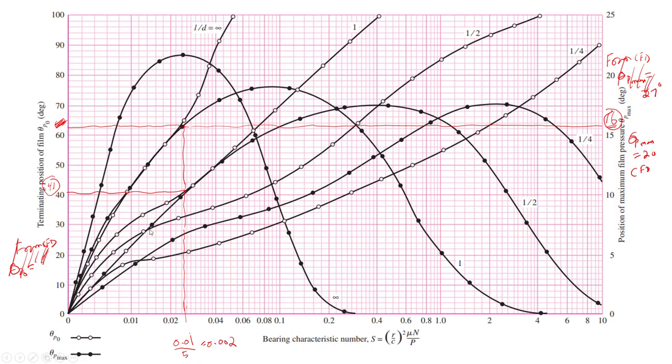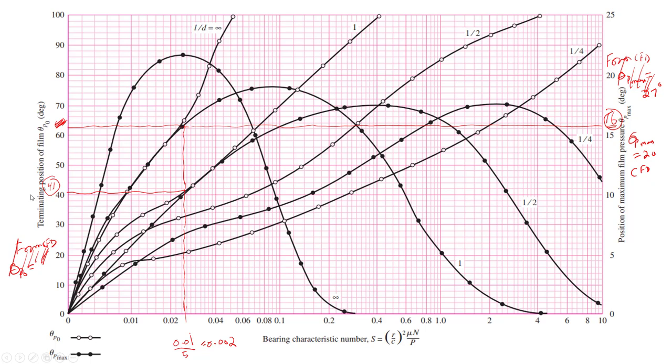Theta P zero is 41 degrees from the graph and from CFD it is around 60 to 70 degrees, which you will see in the video. Everything is discussed from scratch, like definitions, theory, and properties.